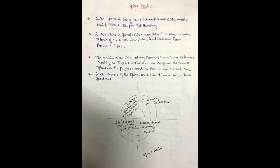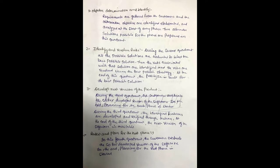In the first phase — objective determination — the requirements are gathered from the customers. After gathering the requirements, we identify the objectives of those requirements, and then elaborate and analyze them. At the start of every phase, the alternative solutions possible for that phase are proposed in this quadrant.